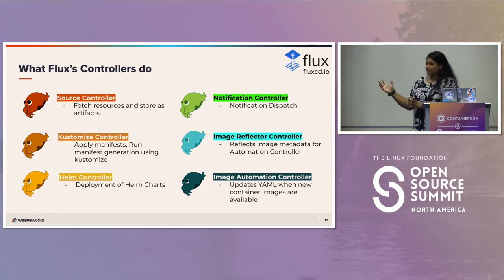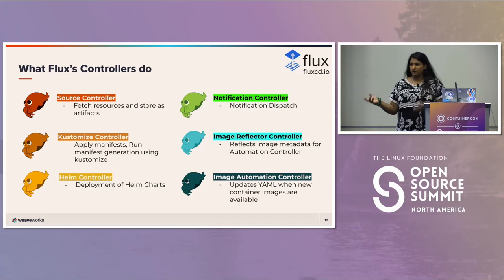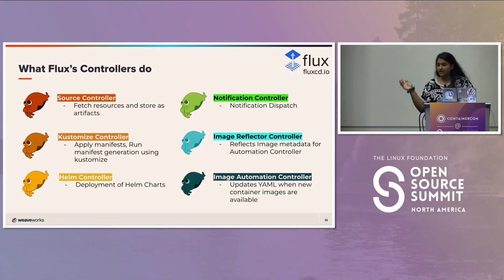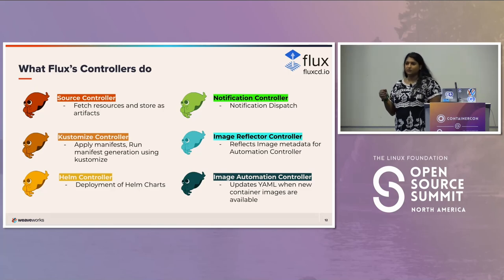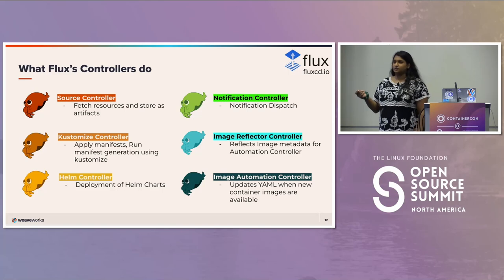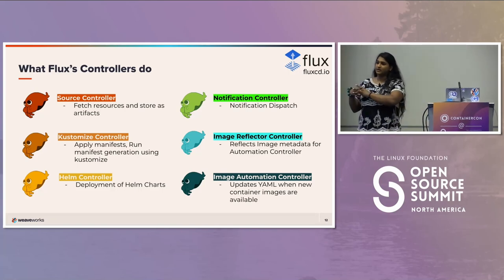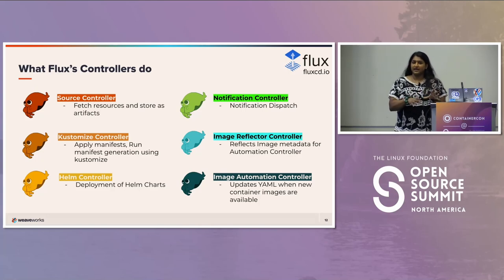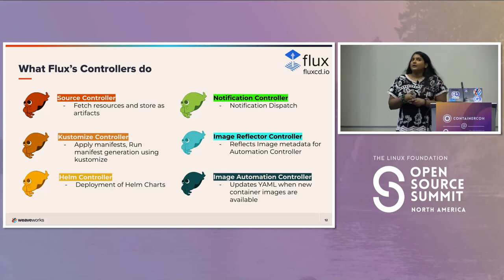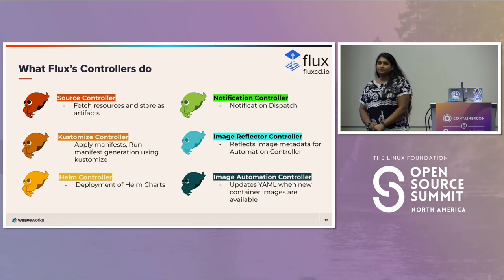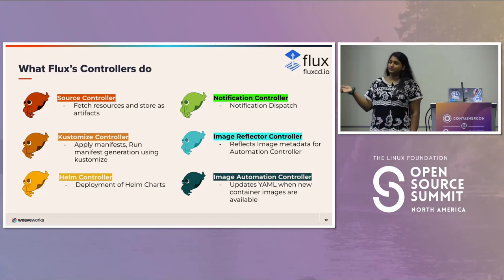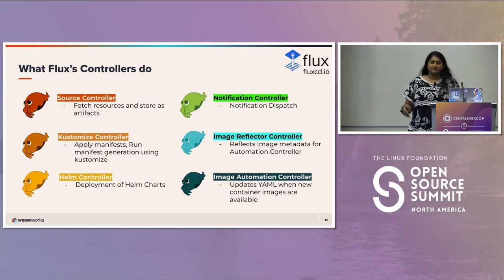The source controller grabs all the YAMLs, Terraform files, and stores them. Then the Kustomize controller goes and applies manifests, running manifest generation using Kustomize. If you already have a kustomization.yaml in the folder you're pointing it to, it will take that and apply whatever's there — whatever overlays and resources you have listed. But if you don't have one, it will recursively search through your folders and apply the YAMLs it finds, creating its own kustomization in the backend.